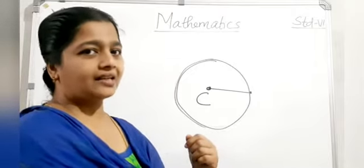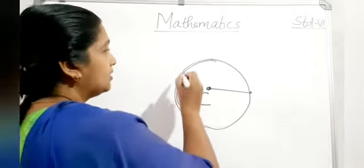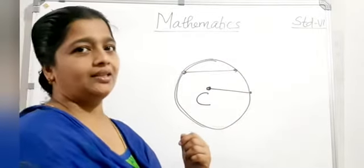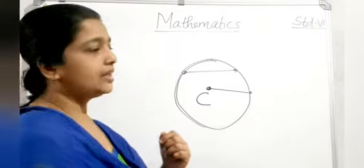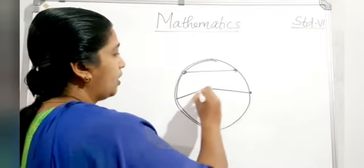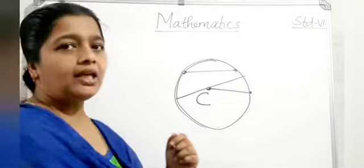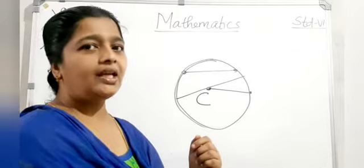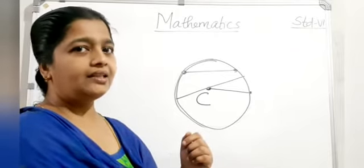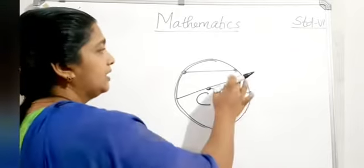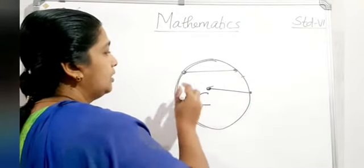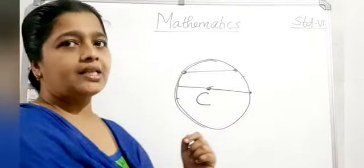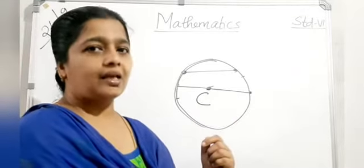The circumference of the circle — C-I-R-C-U-M-F-E-R-E-N-C-E. The distance between any two points joining a line segment inside the circle is called a chord. The longest chord passing through the center is the diameter. The diameter divides the circle into two equal parts, each called a semi-circle.